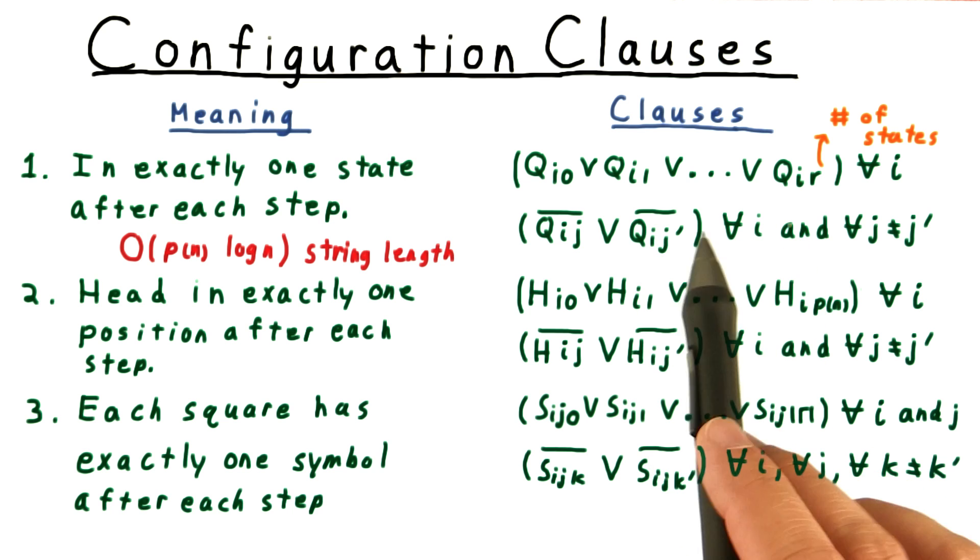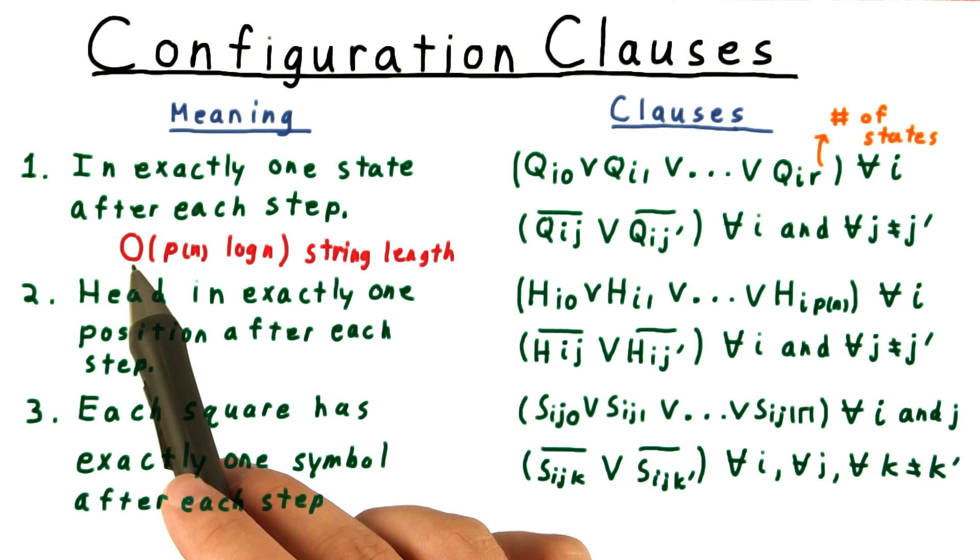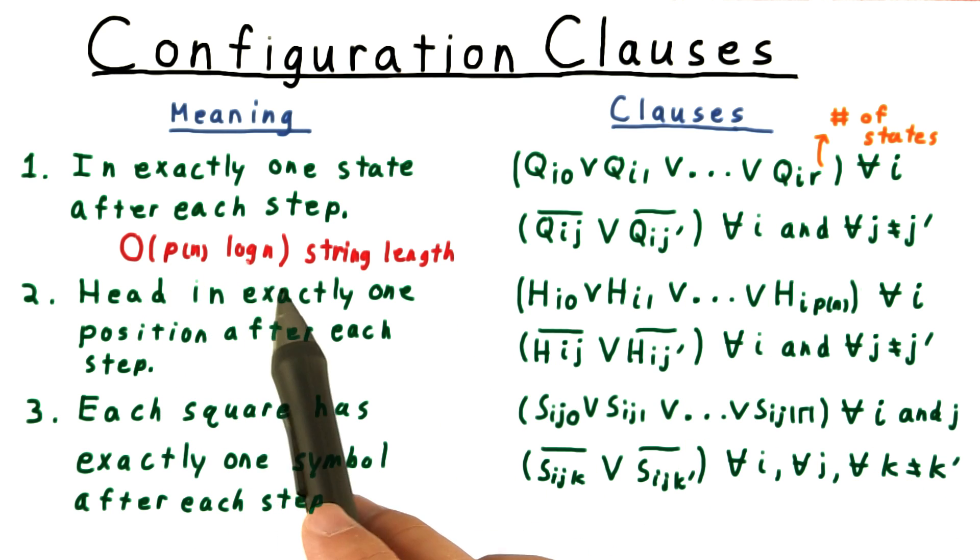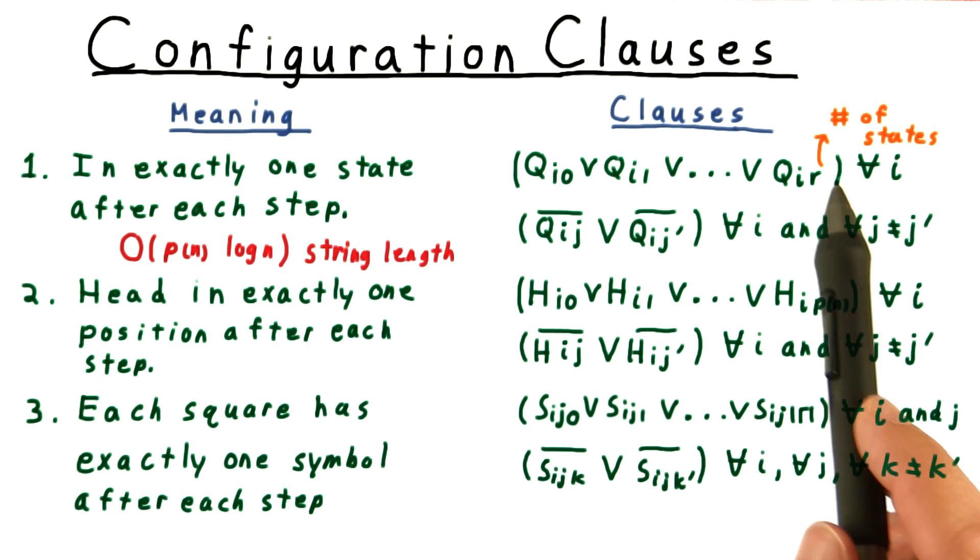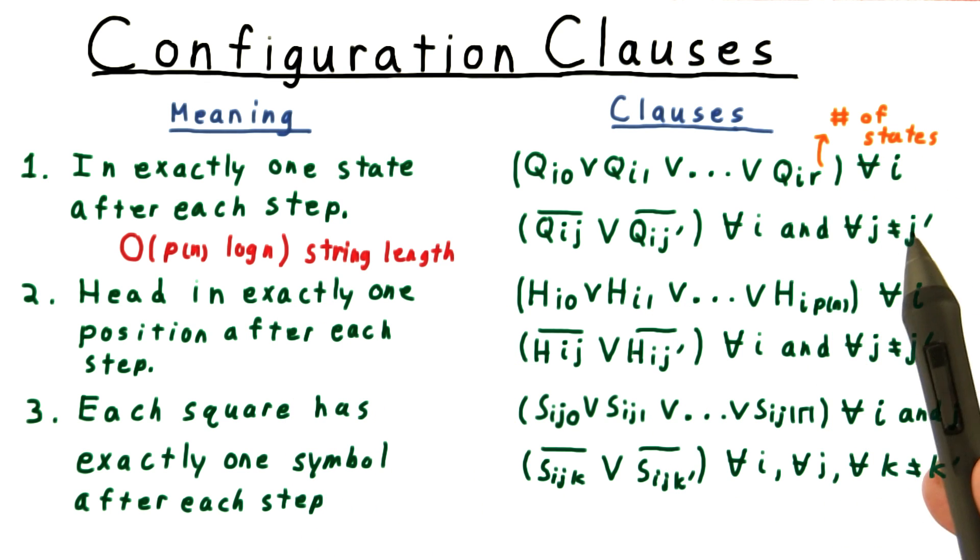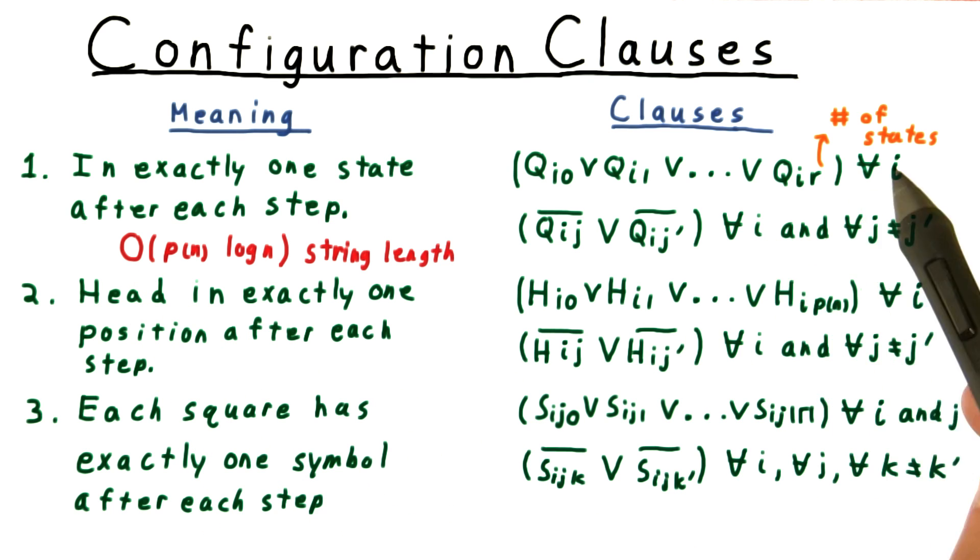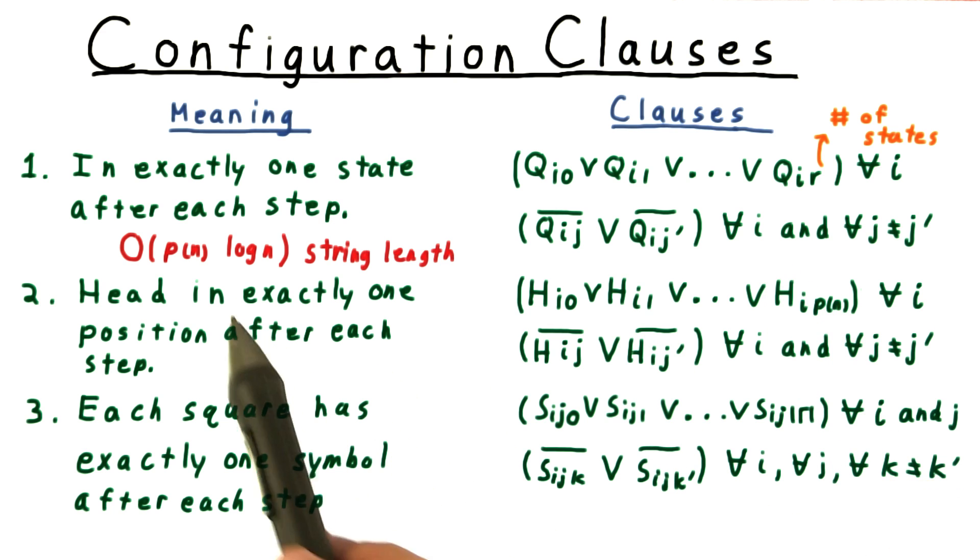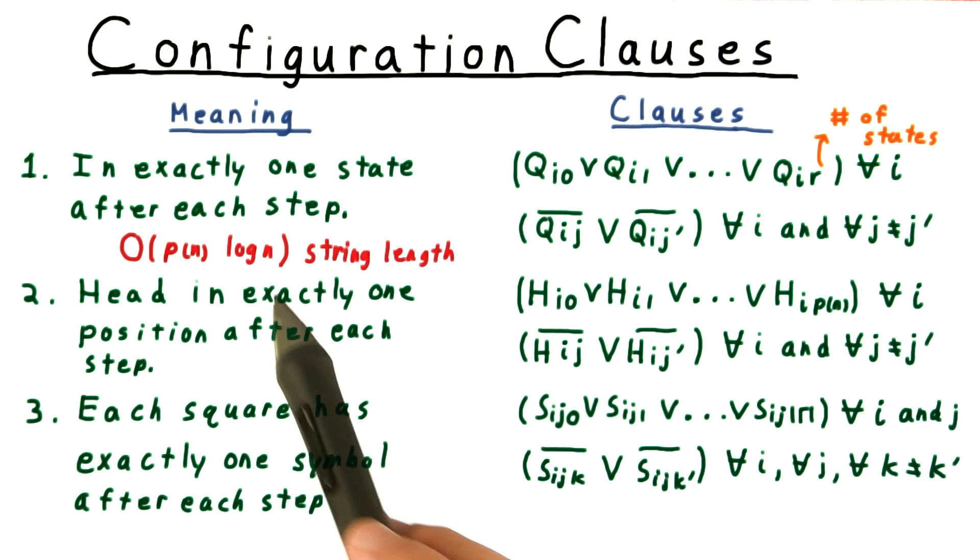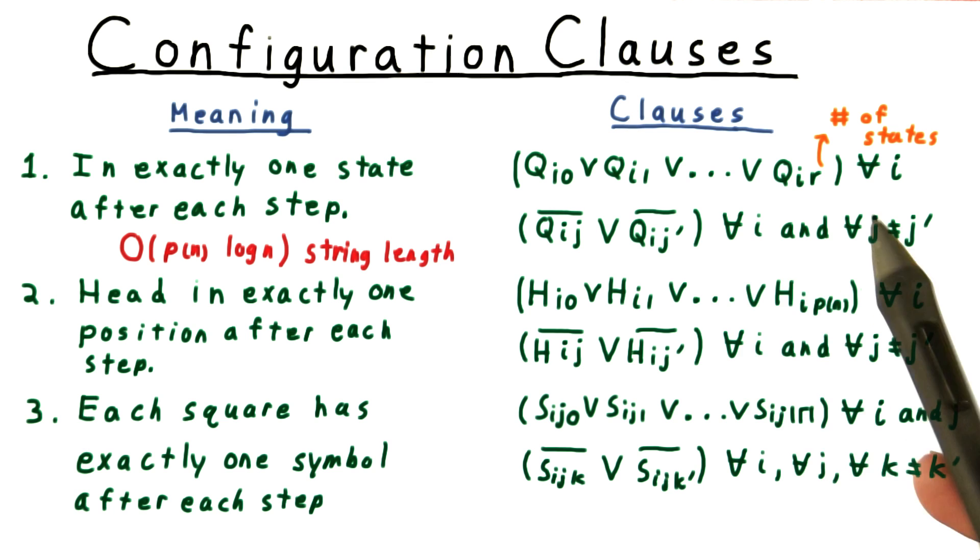These clauses pertaining to the states require order p of n times log n string length. The number of states of the machine is a constant in this context. The p factor comes from the number of steps of the machine, the for all i here. The log n factor comes from the fact that we have to distinguish the literals from one another. This requires log n bits. In fact, in all these calculations, that's where the log factor comes from.